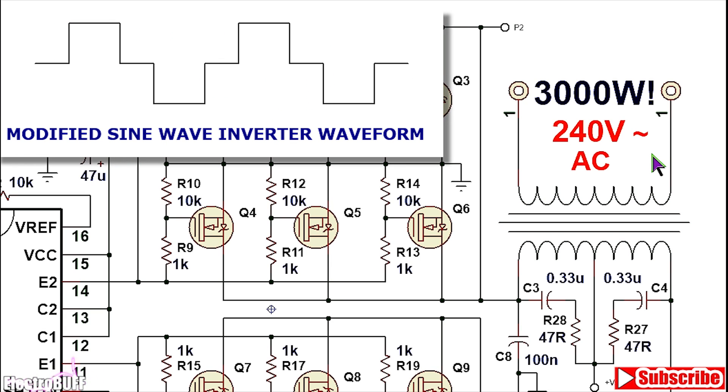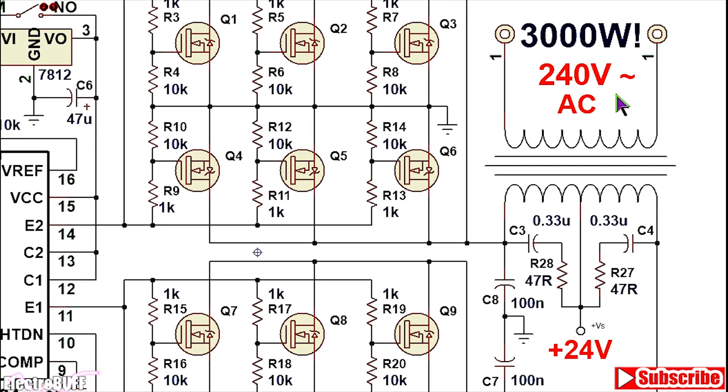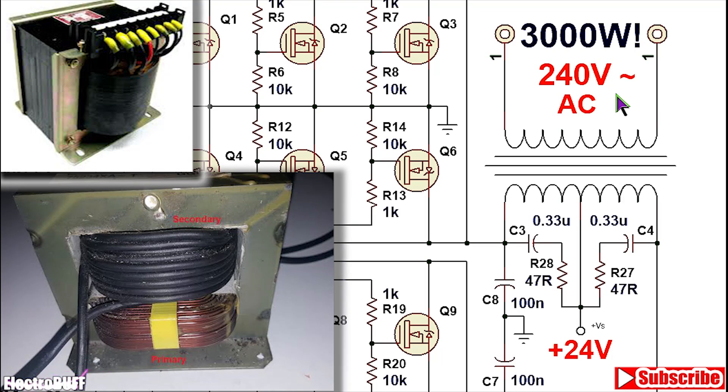The output of the inverter is a modified sine wave with a small dead time in between the half cycles. For the power transformer, for 3000 watts you need a 3000 volt ampere power transformer. This you can salvage from a microwave oven rated for 3000 watts or from an old welding machine. This should work well because they are rated for low frequencies.